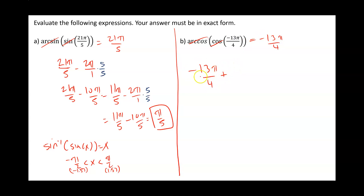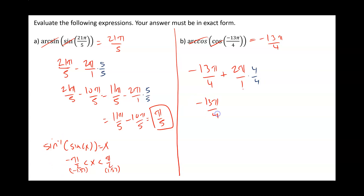Negative 13 pi over 4 is to the left of negative pi over 2. So in order to get it in between these values, we're going to be adding 2 pi over 1. Let's get a common denominator — multiplying by 4 gives a common denominator of 4, so this gives 8 pi over 4. If I add this up, I get negative 5 pi over 4. That's still not between negative pi over 2 and pi over 2.